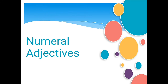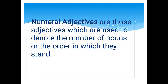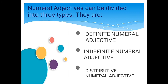Hi, I'm Julianne Sullivan and I'm going to report on numeral adjectives and articles. Numeral adjectives are those adjectives used to denote the number of nouns or the order in which they stand. From the word itself — numeral — it deals with number and tells us how many, how much, or in what order the noun is. Numeral adjectives can be divided into three types: definite numeral adjective, indefinite numeral adjective, and distributive numeral adjective.